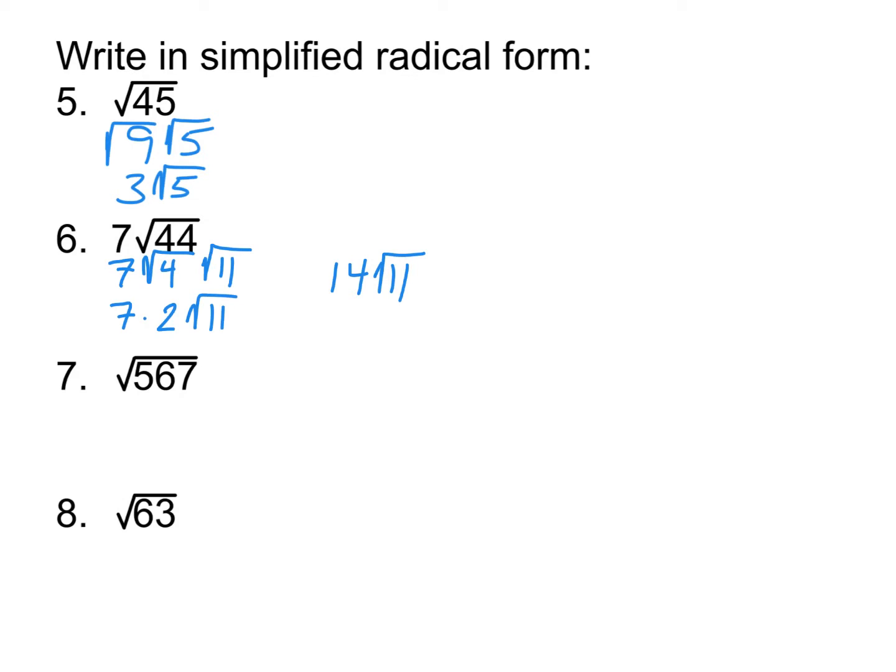567 divided by 169. Does that give us a whole number? No. Okay, 567 divided by 144. Also a decimal. Okay, 567 divided by 121. No. Okay, 567 divided by 100. No, that's definitely not going to work. 567 divided by 81.